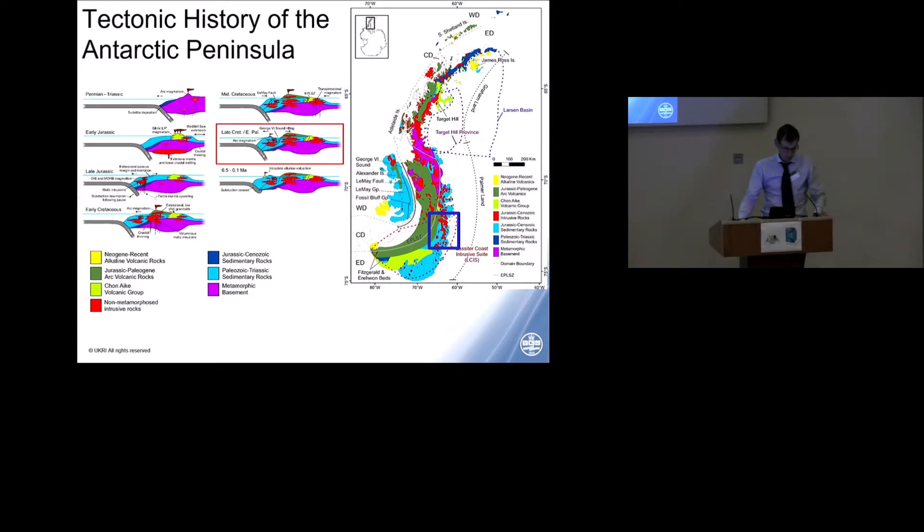So, following this mid-Cretaceous compressional deformation, magmatic activity on the peninsula began to wane. Post-inversion extension produced a rift in the George Sixth Sound, separating Alexander Island from the rest of the peninsula. Subduction progressively ceased northwards, as did associated magmatism, and between 34 and 30 million years ago, a deep-water connection was established, separating Antarctica from South America. And finally, following the cessation of subduction along the peninsula, intraplate alkaline volcanism has continued from about 6.5 million years ago to 100,000 years ago.